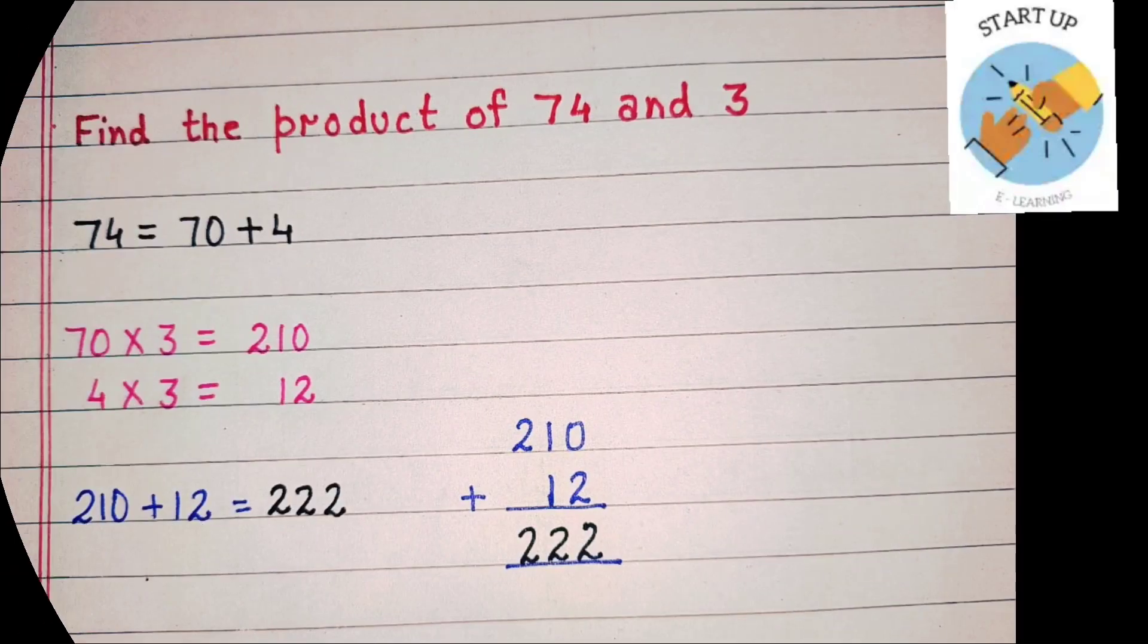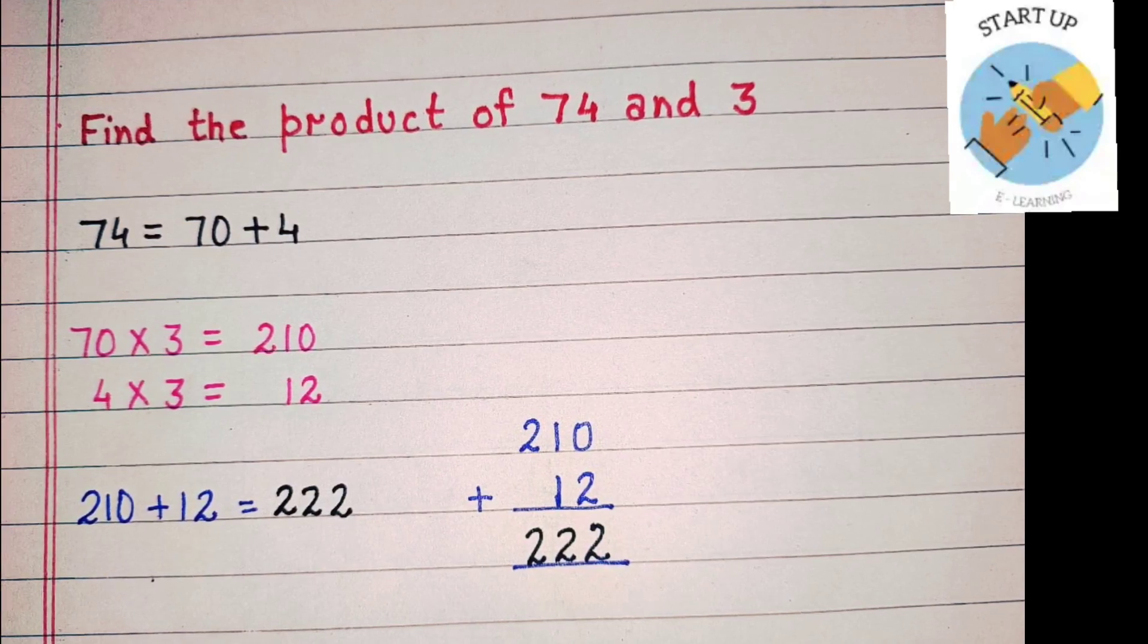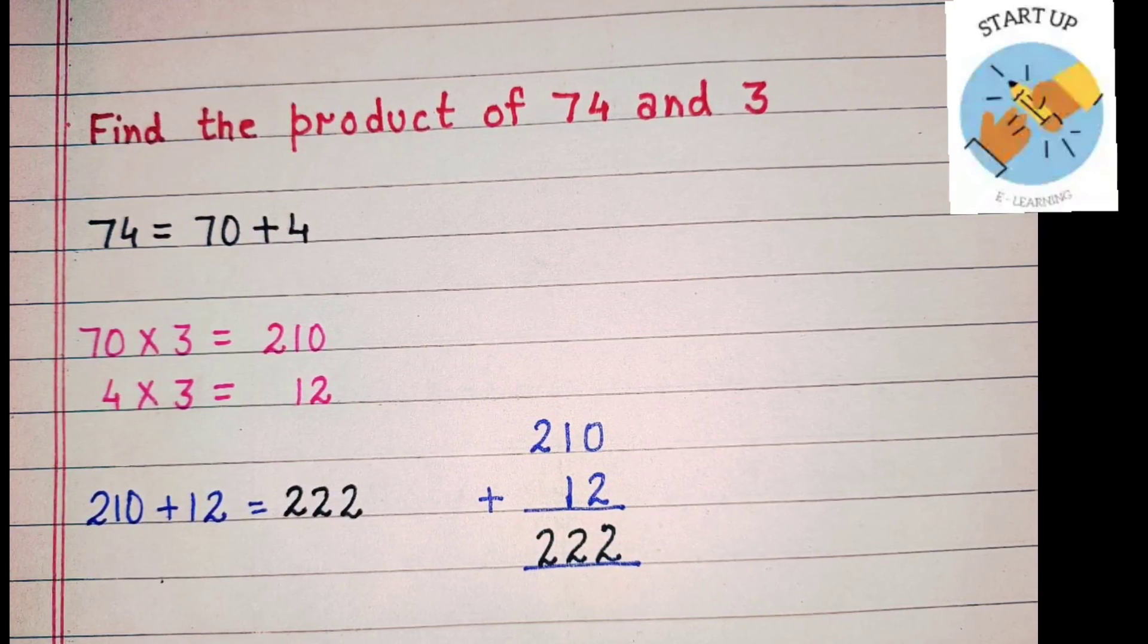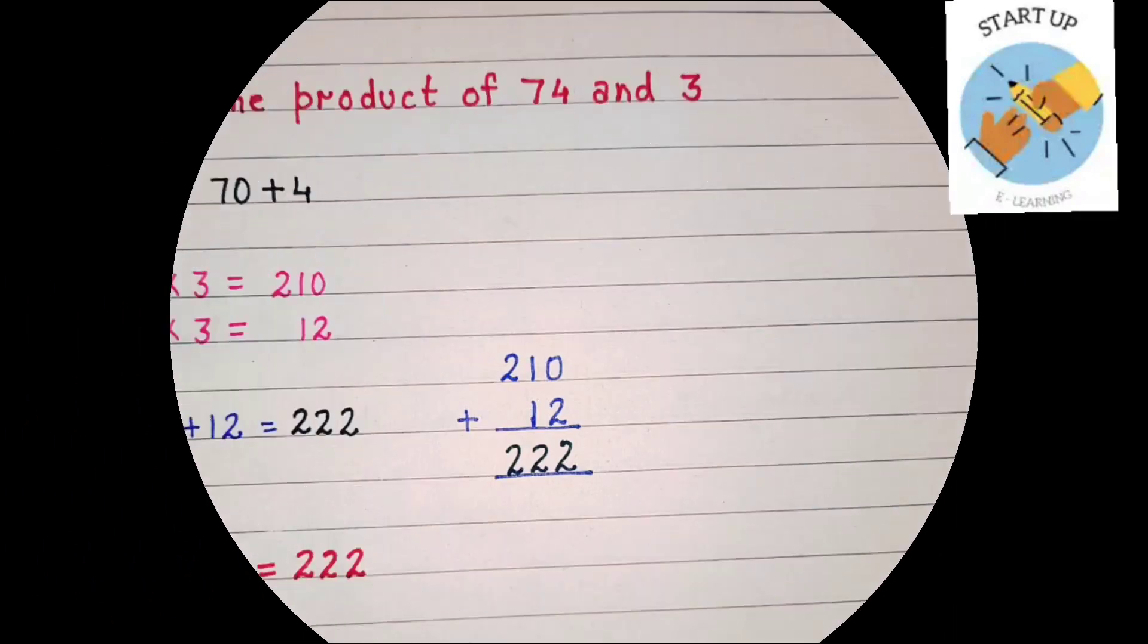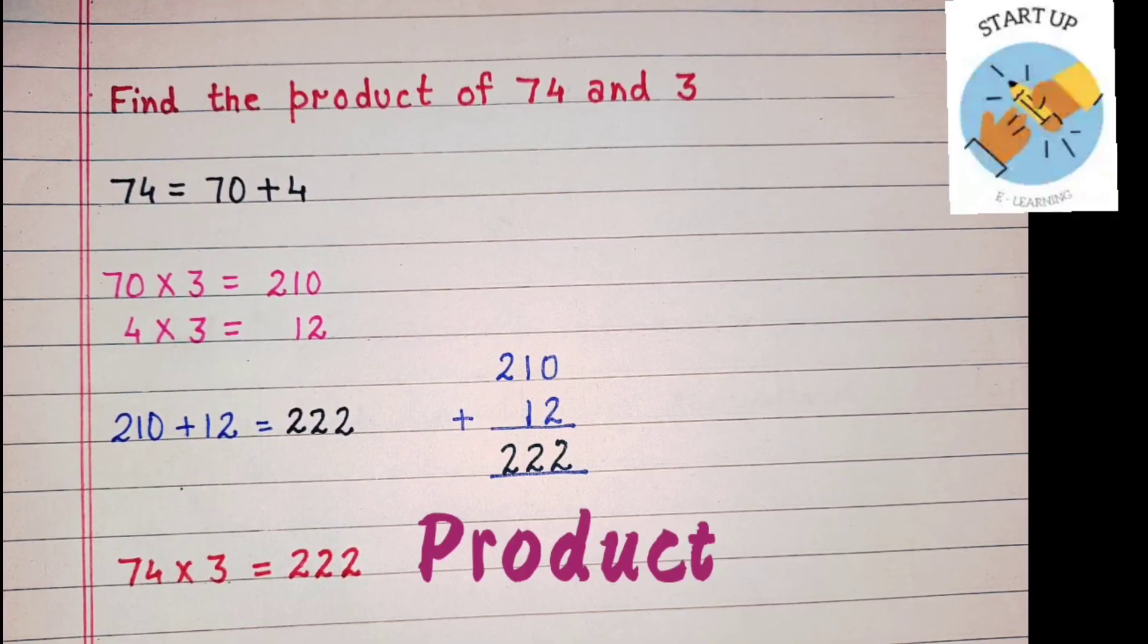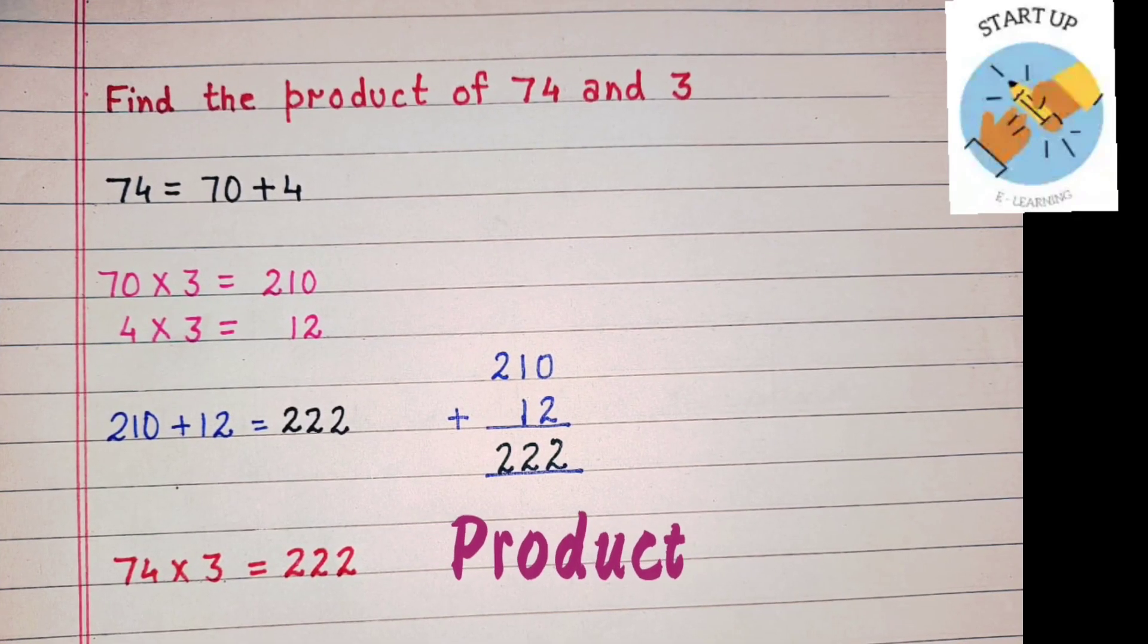0 plus 2 is equal to 2. 1 plus 1 is equal to 2. 2 plus nothing is equal to 2. So, the product of 74 and 3 is 222.